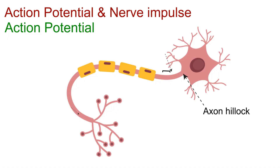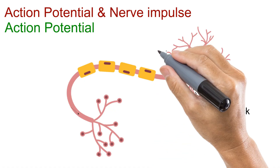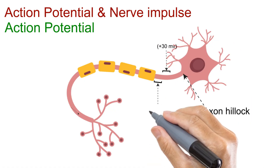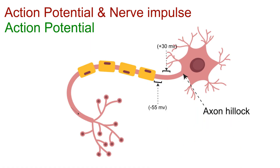When one section of the membrane depolarizes, the nearby region also reaches its threshold, and a new action potential is generated there. In this way, the signal keeps triggering the next segment, one after another, creating a self-propagating wave of electrical activity.